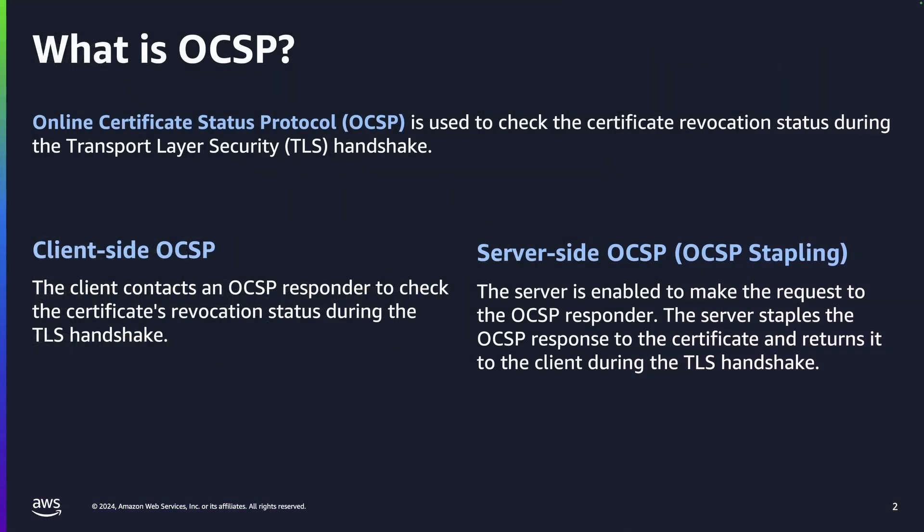When your device or other client attempts to connect to AWS IoT Core, the AWS IoT Core server will send an X.509 certificate that your device uses to authenticate the server. Authentication takes place at the TLS layer through validation of the certificate chain. This is the same method used by your browser when you visit an HTTPS URL.